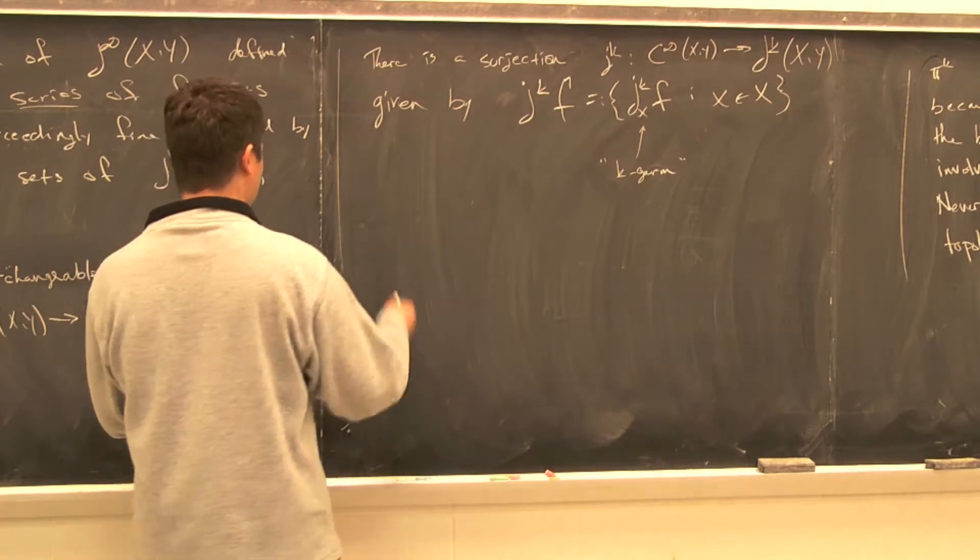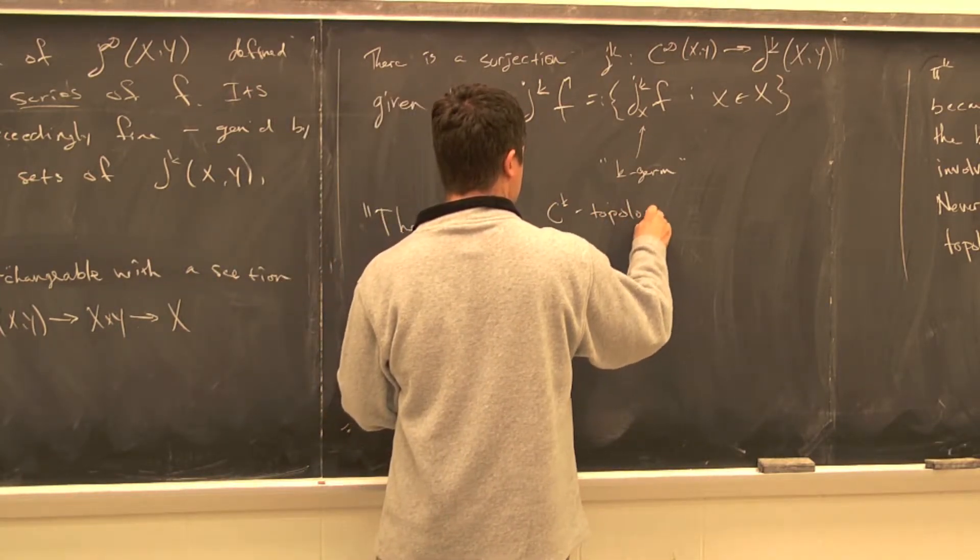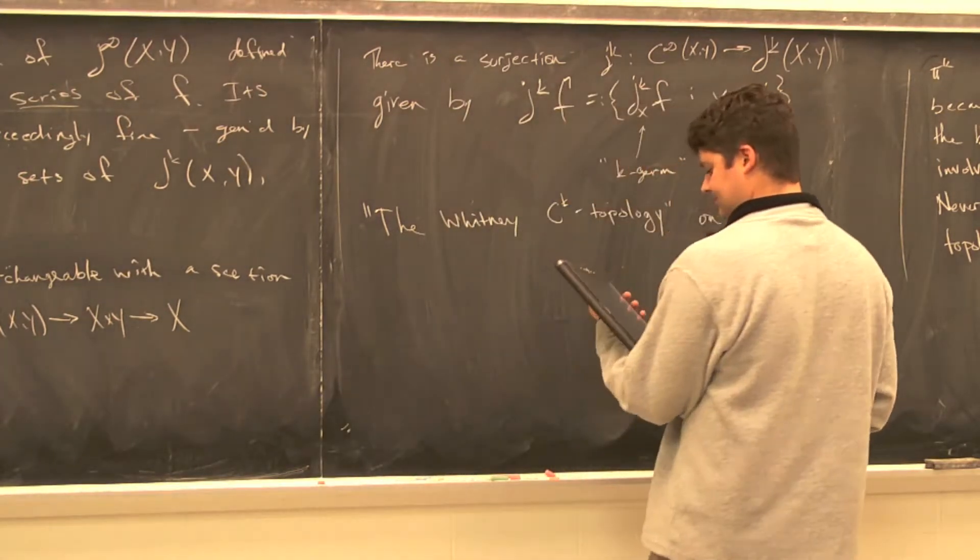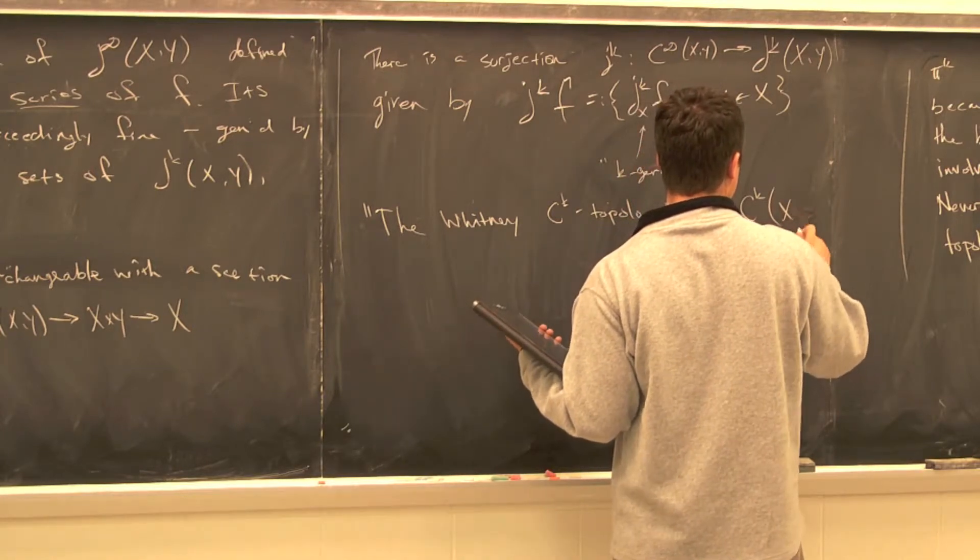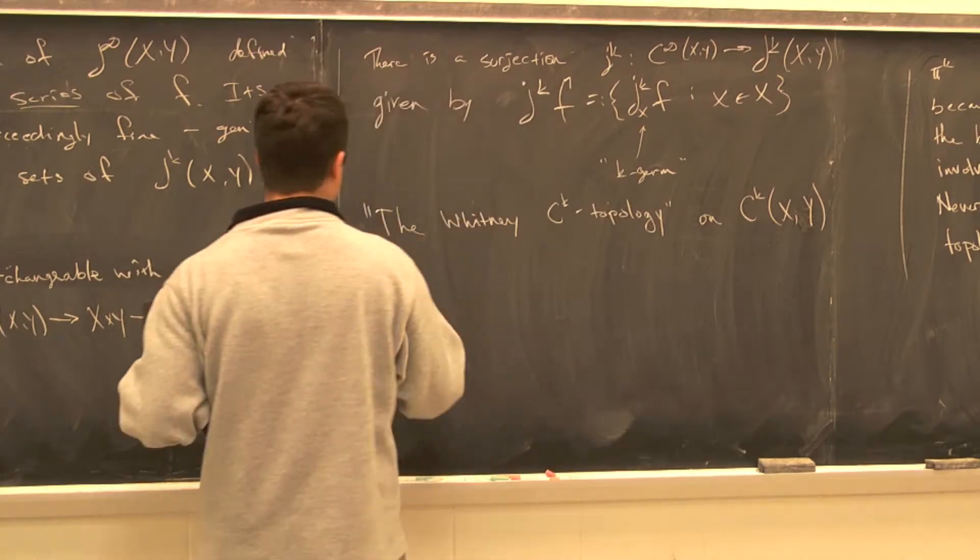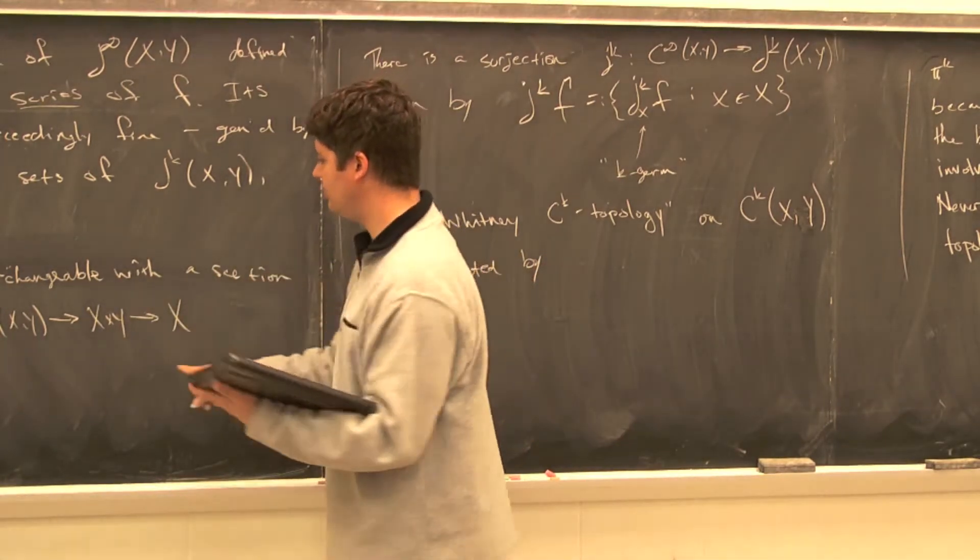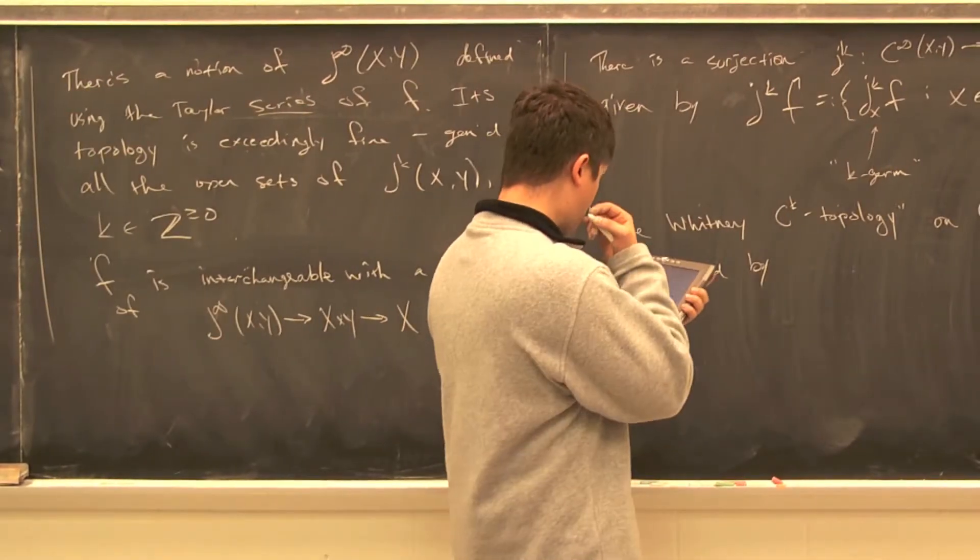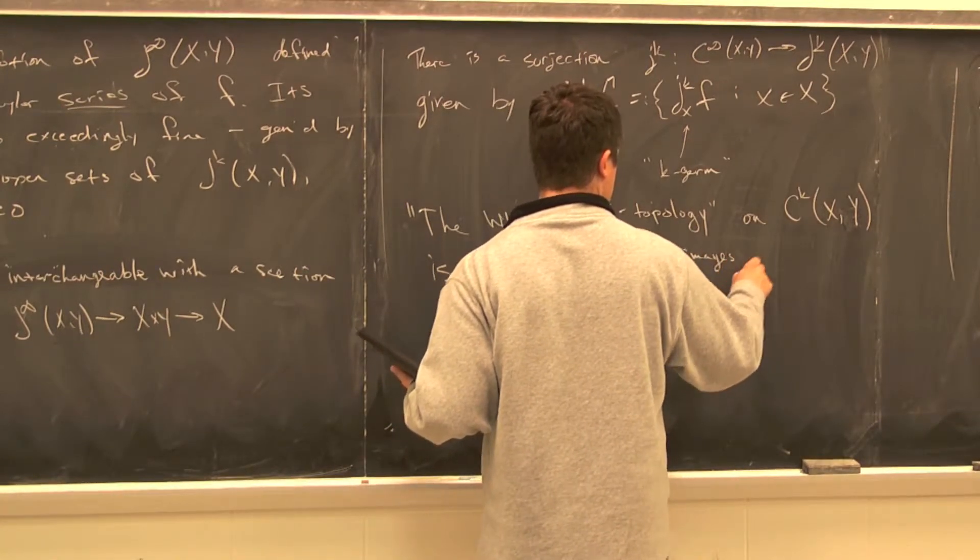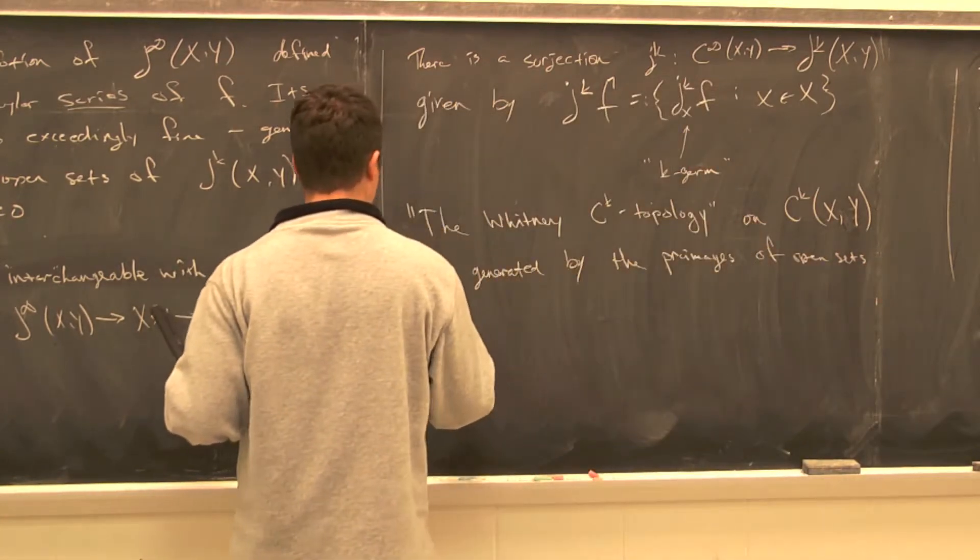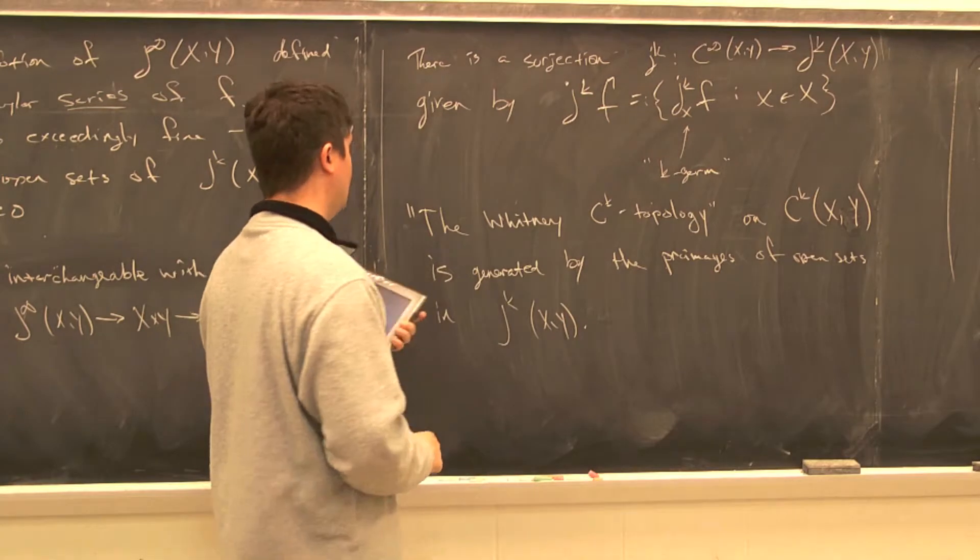If I didn't specify an x, and I just said J^k of F, then that's typically what people call the k-jet of F, and it's a section of J^k. So the infinity jet of F is just F. There is a surjection from C infinity of X,Y to J^k of X,Y, given by taking the k-jet of F without specifying x.